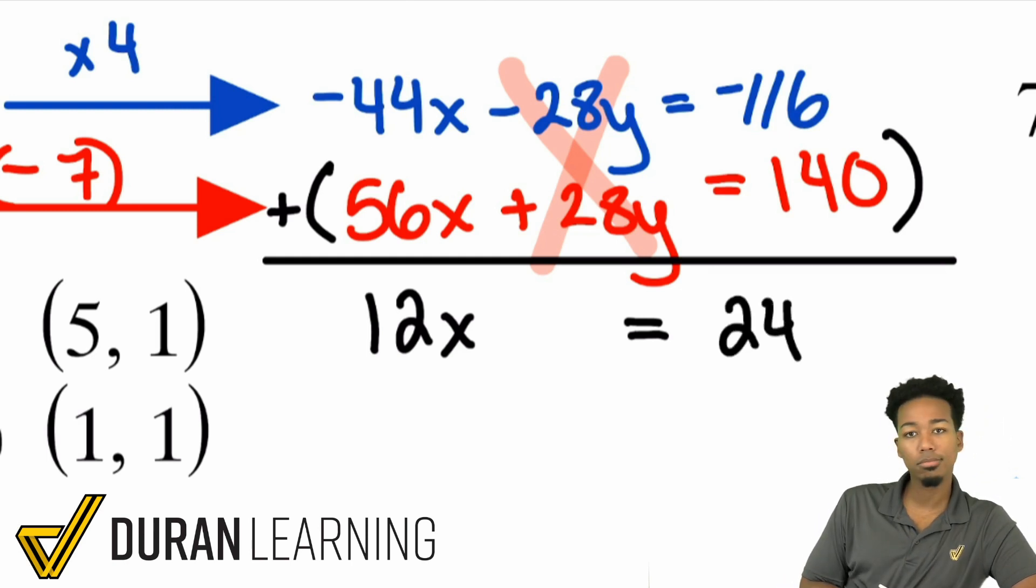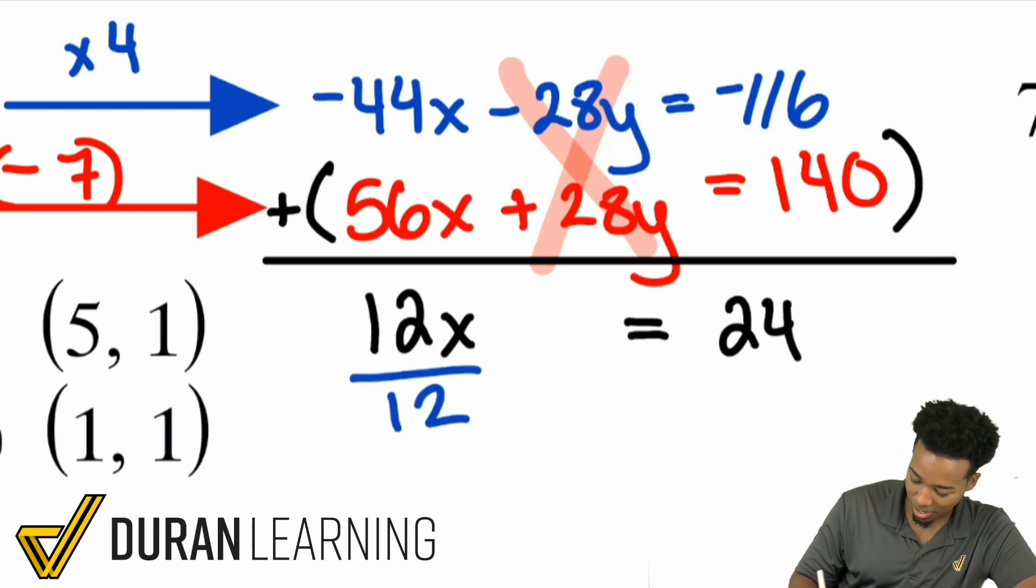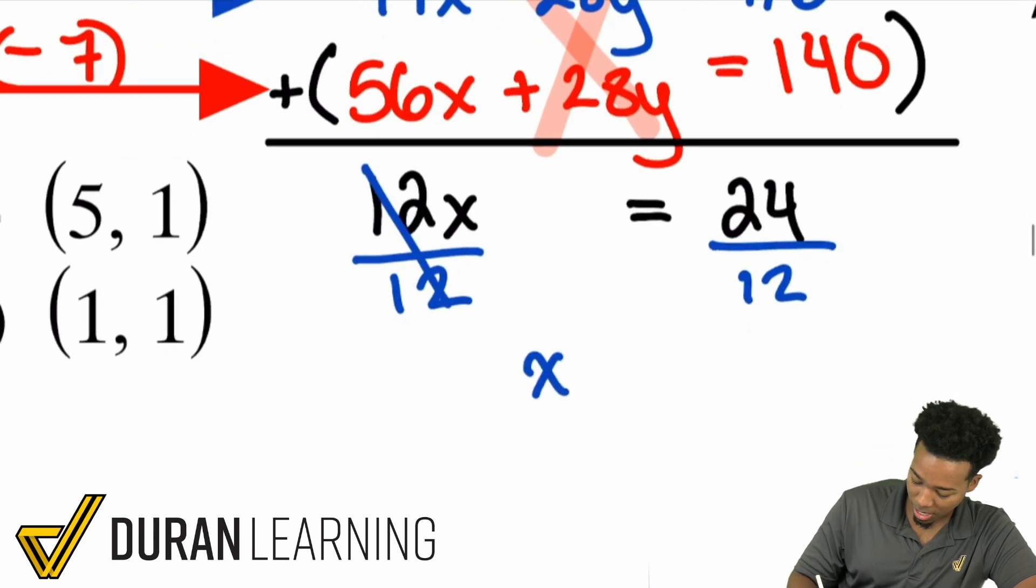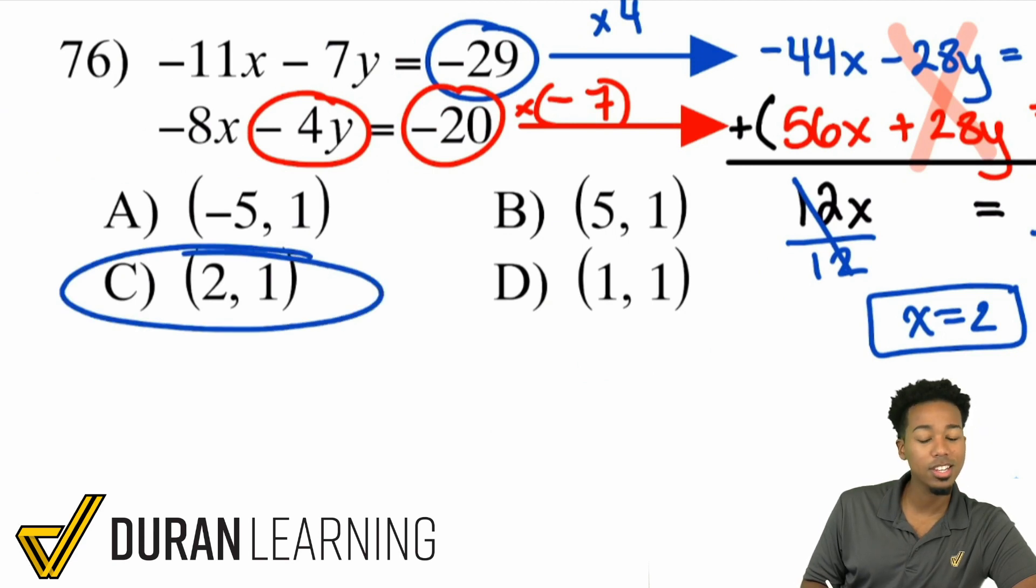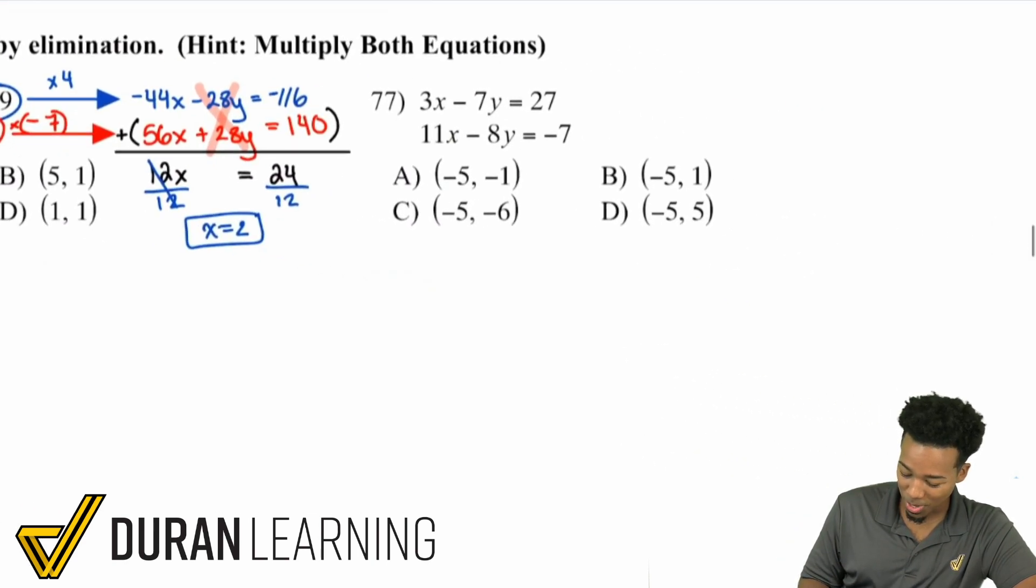And look at that. We've eliminated the y. We just have the x left and what I'll do to both sides is I'll divide by 12. Nice and easy. Divide by 12 on both sides, giving me x equals 2. Sweet. Do I have to do anything else? Nope. Answer choice C is the only one where x equals 2. And I am done. Let me go through a couple more examples with you, my party people.